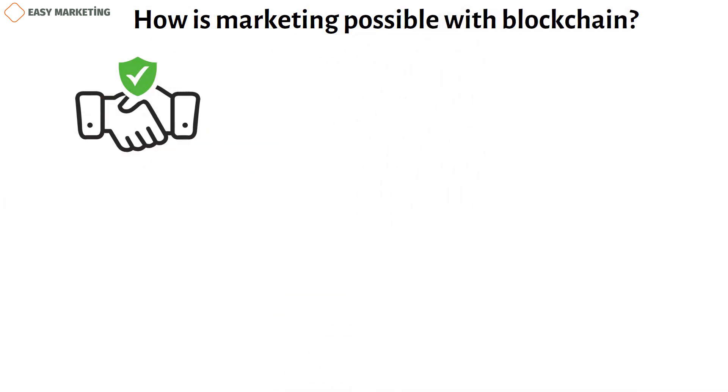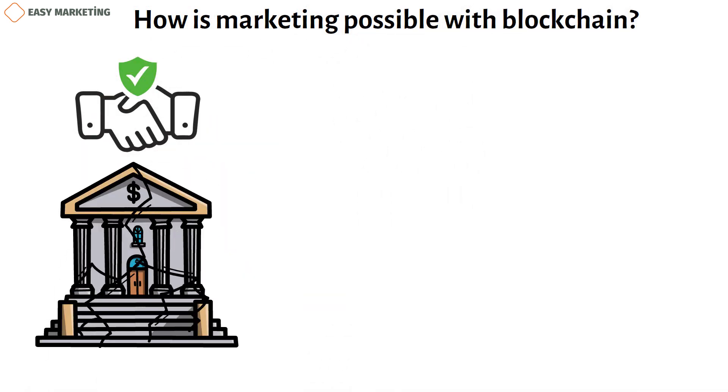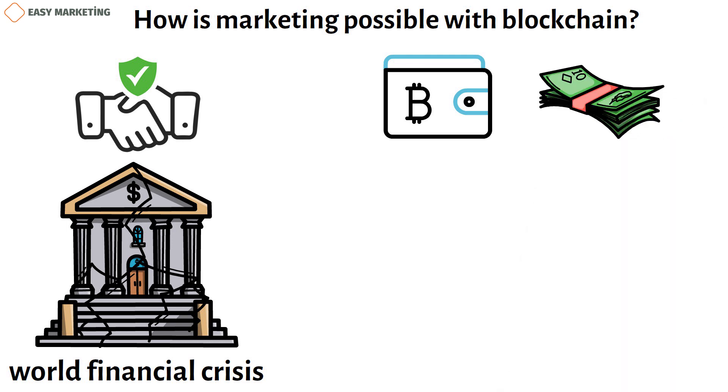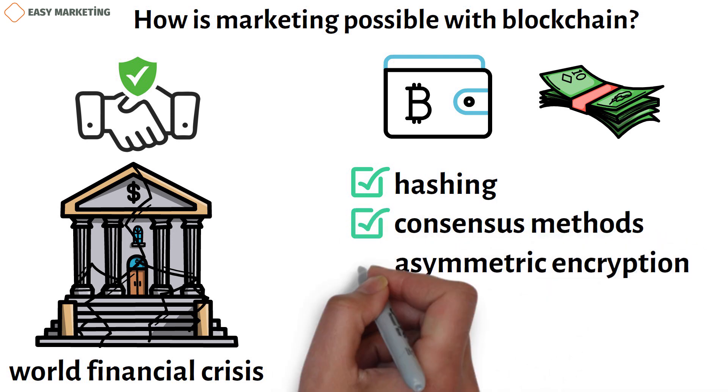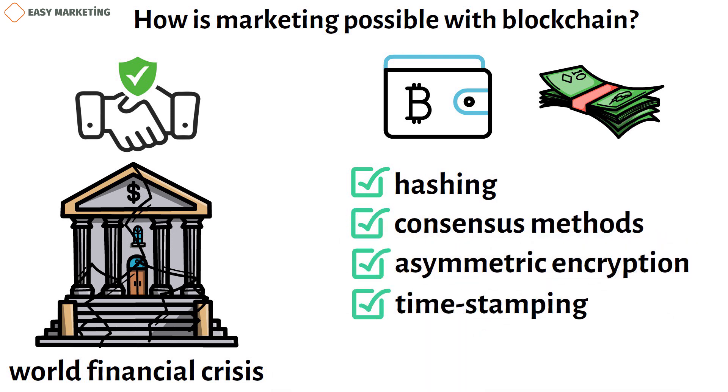The trust in the conventional banking system was damaged by the world financial crisis in 2008, the introduction of the peer-to-peer electronic cash system, known as Bitcoin. At this time demonstrated the use of cryptographic techniques for handling financial transactions. Hashing, consensus methods, asymmetric encryption, and timestamping are some of the cryptographic techniques that underlie Bitcoin.